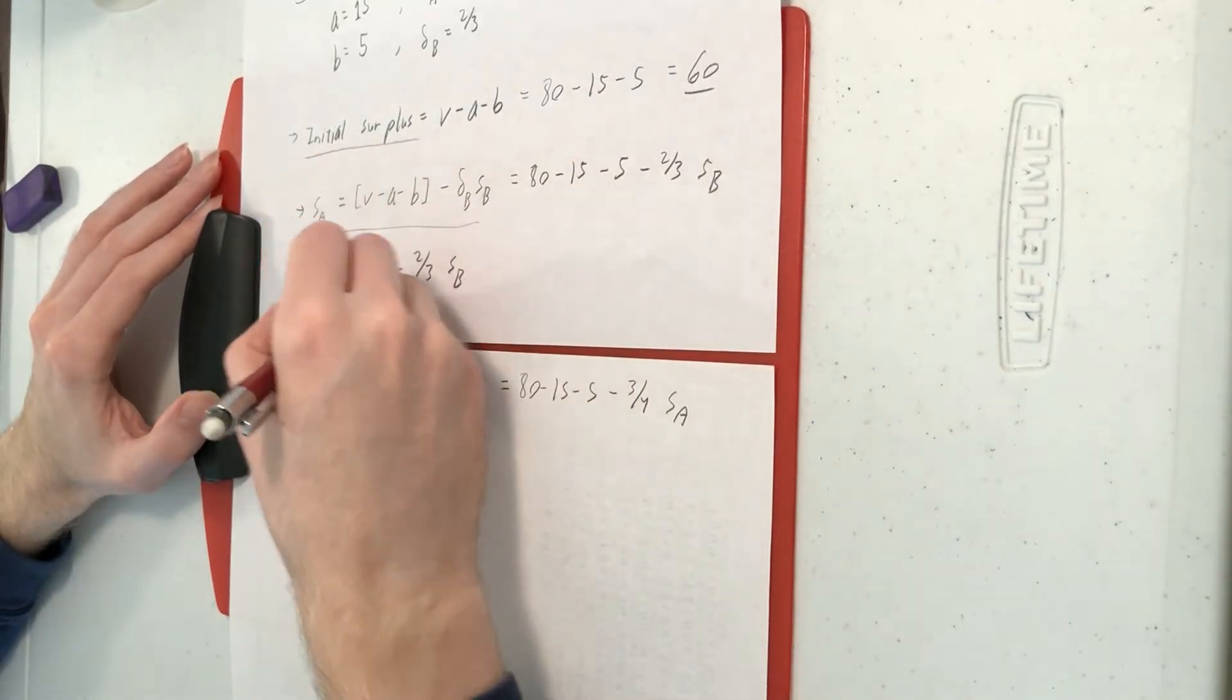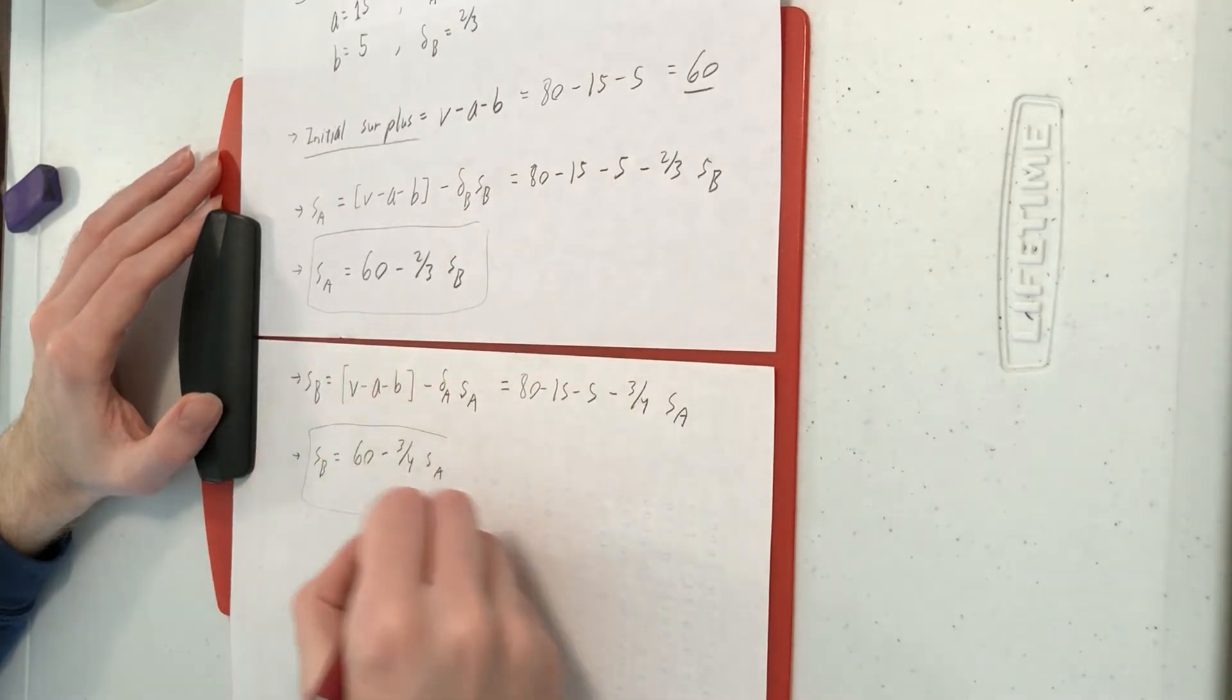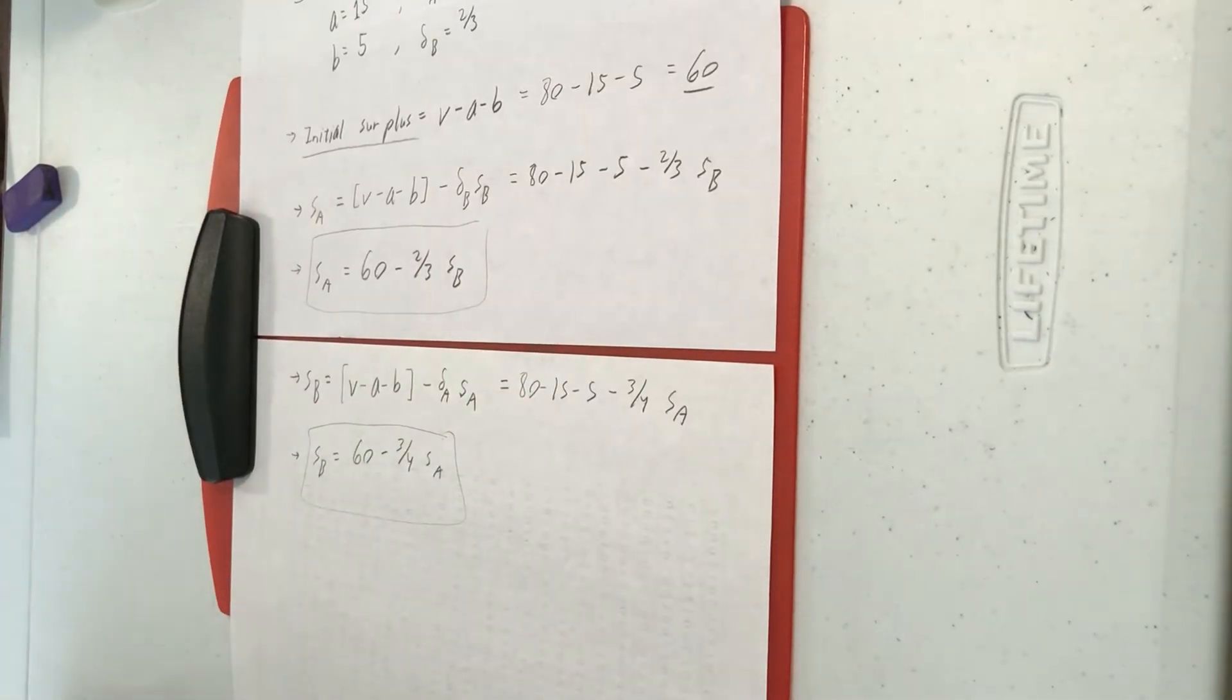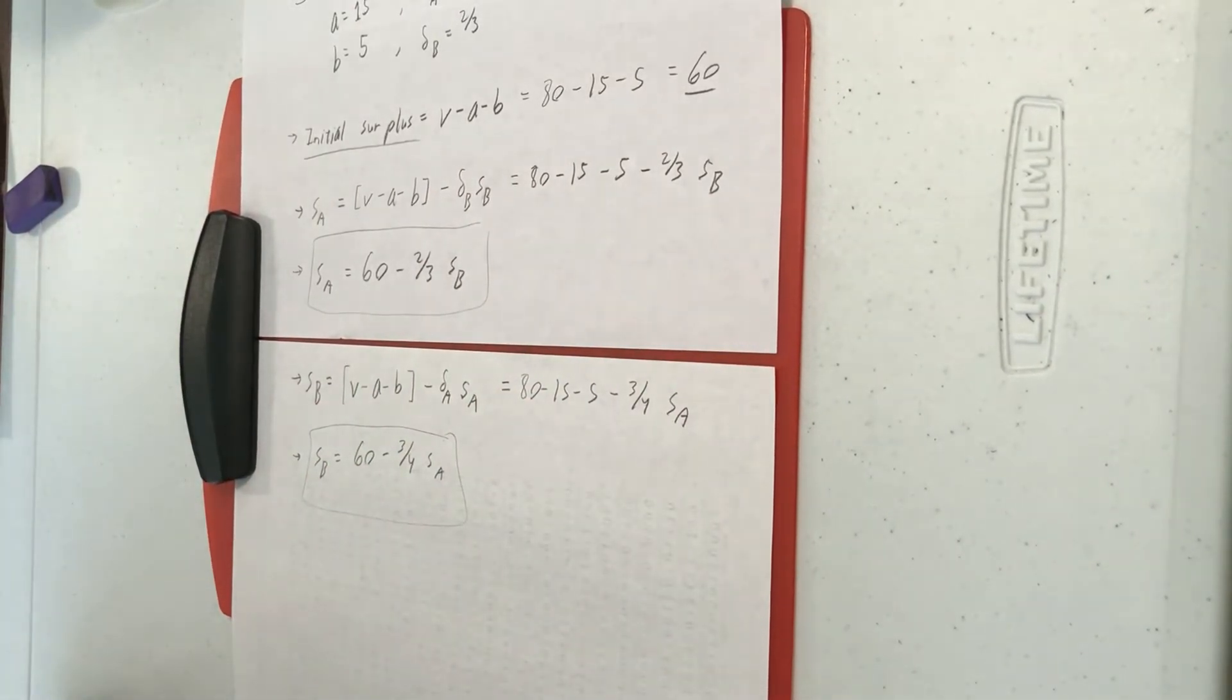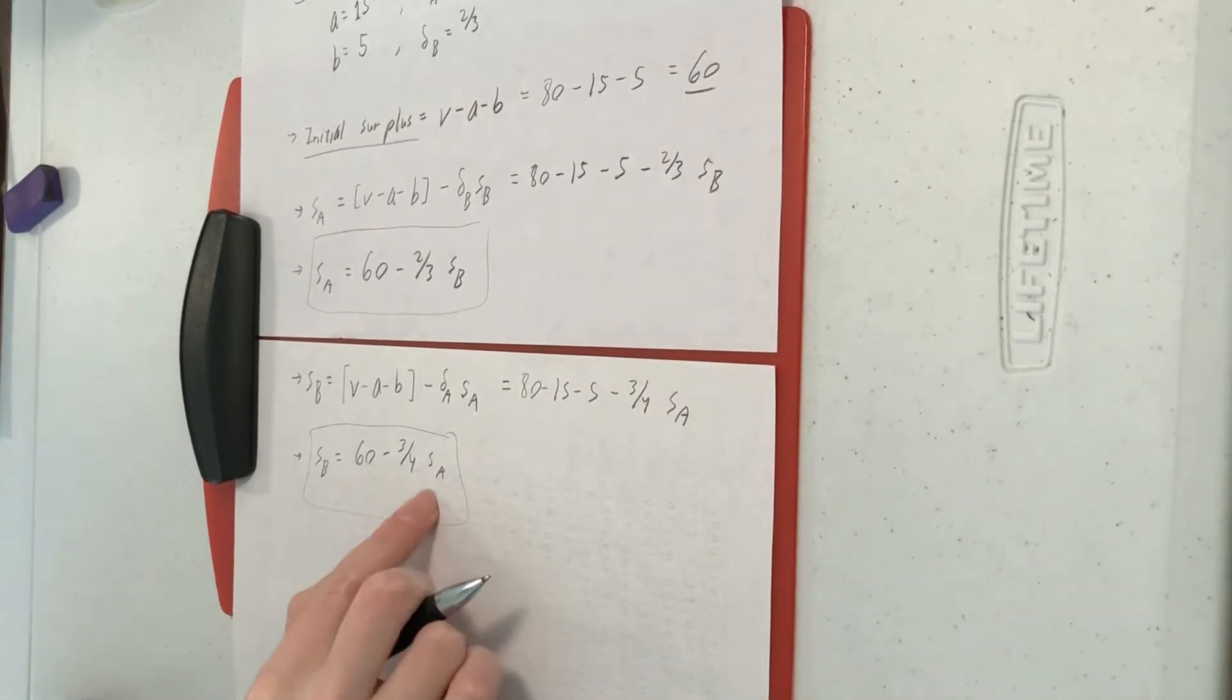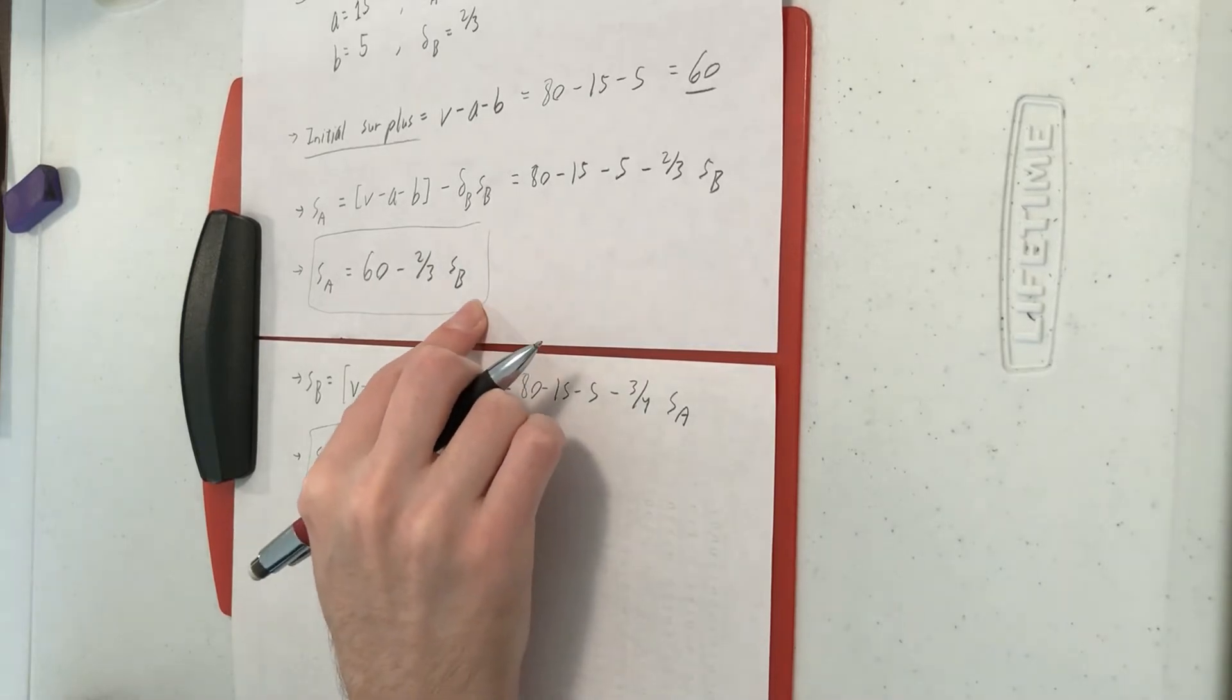We have these two equations. That gives us enough information to solve the two unknowns. The two unknowns are SA and SB. I'm going to plug in this equation here for SB into there to sub out SB.